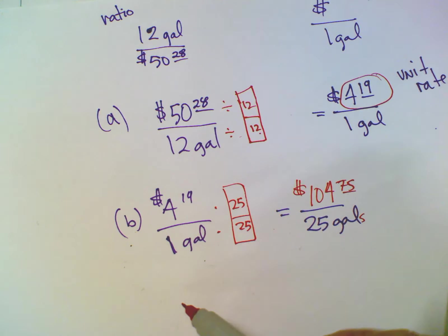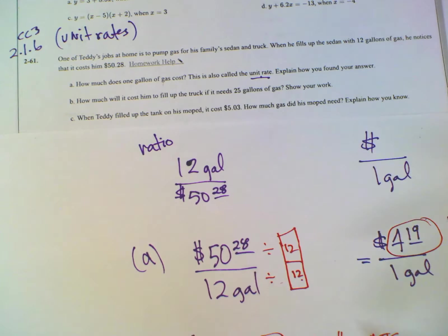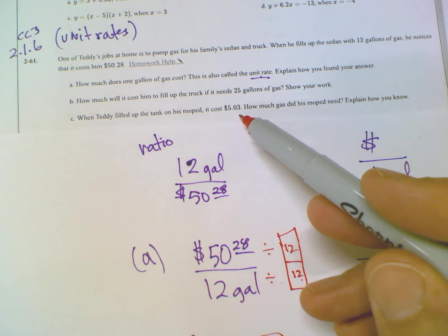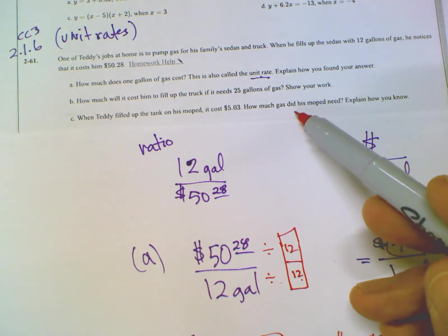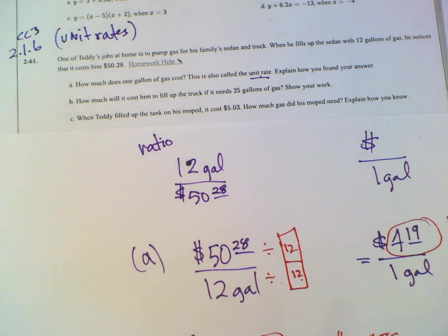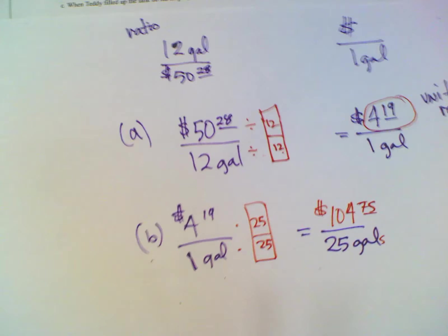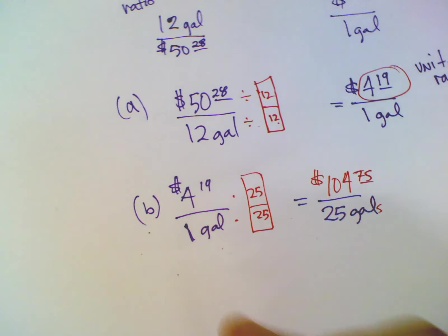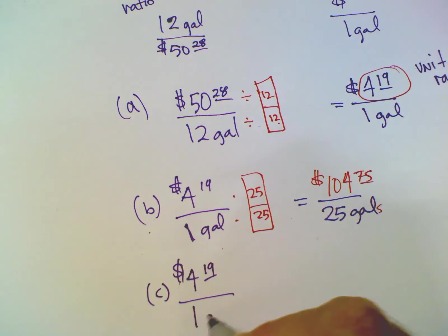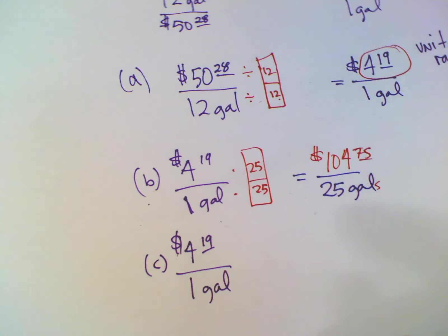And last one, C. C says, when Teddy filled up the tank on his moped, it costs $5 and 3 cents. How much gas did his moped need? Explain how you know. Okay. So, we know that the cost of the gas at the same station. So basically we figured out the unit rate, which is $4 and 19 cents for every one gallon is the cost of gas at this station.